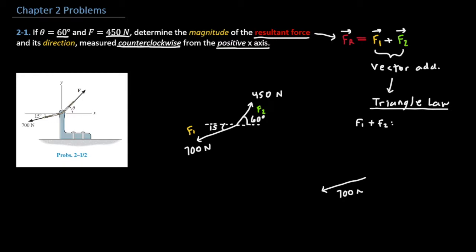So I'm going to start off with F1 and then adding F2. That's going to start from the head of F1, and it remains in the same direction as in the diagram. And now for the resultant force FR, it starts from the head of F2 and it joins the tail of F1, just like that.